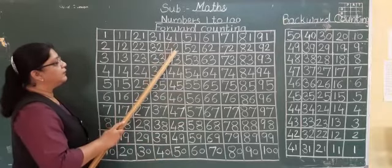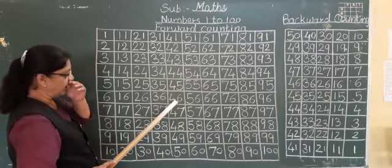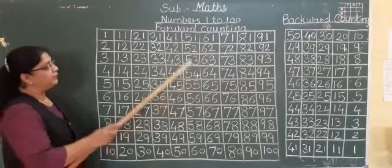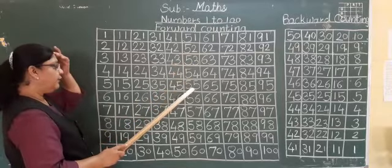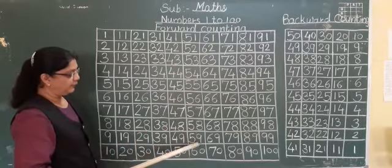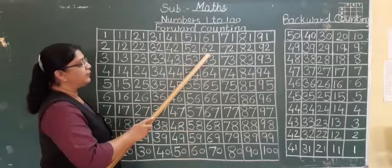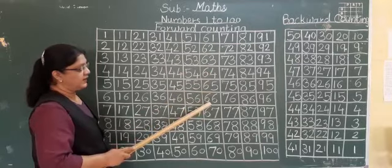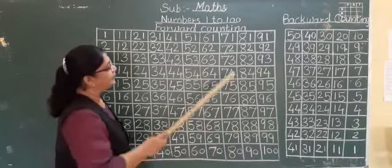41, 42, 43, 44, 45, 46, 47, 48, 49, 50. 51, 52, 53, 54, 55, 56, 57, 58, 59, 60. 61, 62, 63, 64, 65, 66, 67, 68, 69, 70.